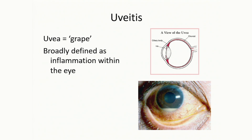My specialty is uveitis, or ocular inflammatory disease. This is probably not something most of you are very familiar with unless you've been unfortunately affected yourself or had a loved one who is. It's broadly defined as intraocular inflammation. This is an example of a patient who has active uveitis. This little white blood cell pus pocket here is called a hypopyon, and it's not a good thing.